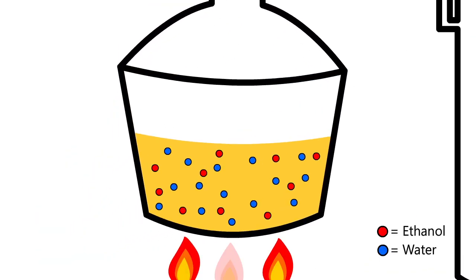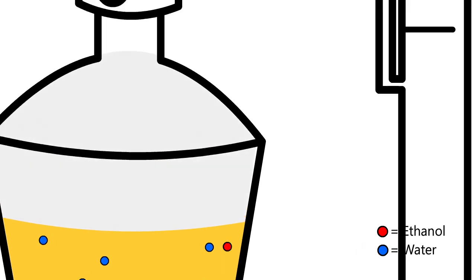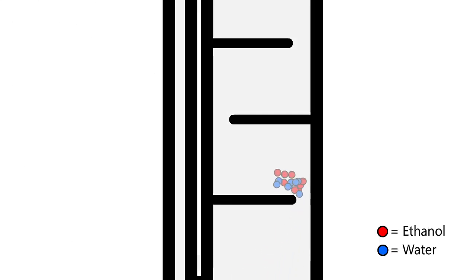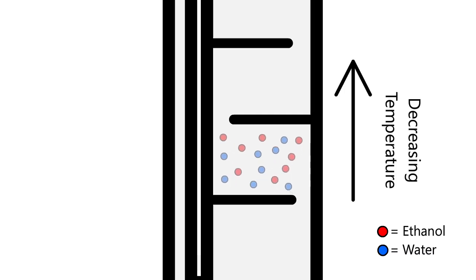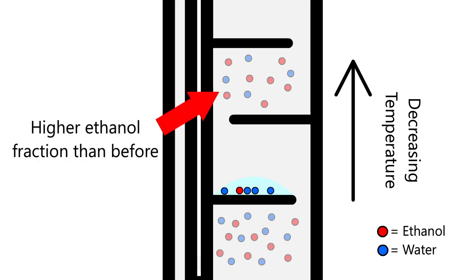As the fermented mash of ethanol, water, and other impurities is boiled, a vapor containing a higher fraction of ethanol than the mash contains rises in the column. Eventually, the vapor reaches a point in the column that is cool enough for it to condense back into a liquid, which is caught on a condenser plate. Further hot vapor rising in the column will cause the collected liquid to boil again, causing it to have an even higher fraction of ethanol.